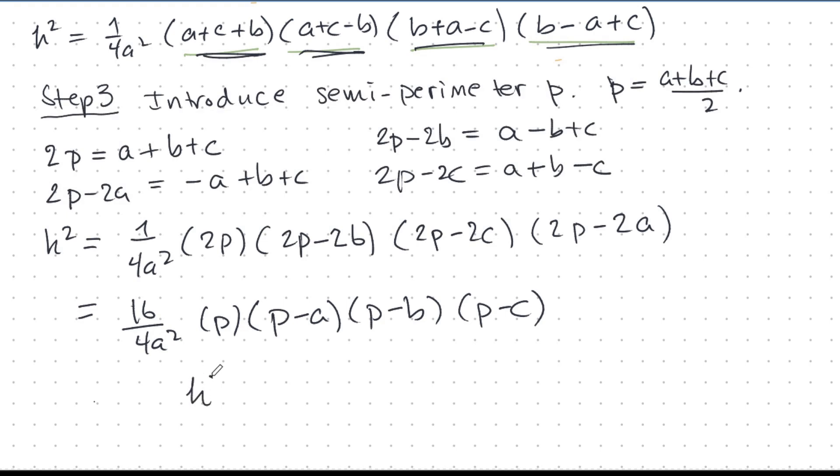And so, this now becomes a beautiful expression for H squared: 4 over A squared times P, P minus A, P minus B, P minus C. Very nice. And we will use this in the last step coming up next.